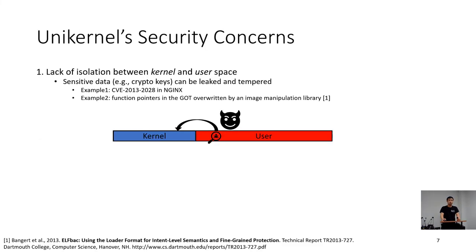First, due to the lack of isolation between kernel and user space, a vulnerability in an application can leak or tamper sensitive data such as crypto keys. For example, a web server's HTTP parsing code can be exploited by an attacker. In addition, function pointers in the global offset table can be overwritten by an image manipulation library.